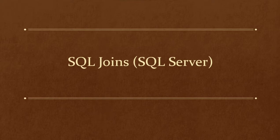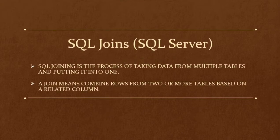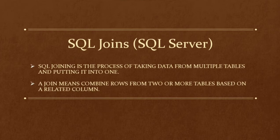SQL Join is used to pull data from one or more tables — to extract data from tables which have a one-to-many or many-to-many relationship between them. SQL joining is the process of taking data from multiple tables and putting it into one. A join means combining rows from two or more tables based on a related column.